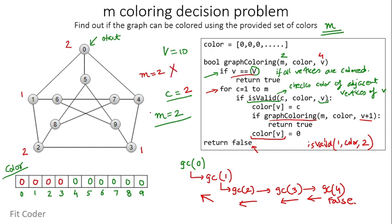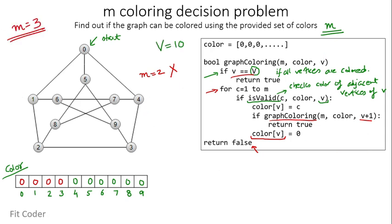Let's try with M equal to 3. We start with GC(0). No vertices are colored, so we assign color 1 to vertex 0. We invoke GC for vertex 1. Color 1 is already assigned to the adjacent vertex, so we assign color 2 to vertex 1.